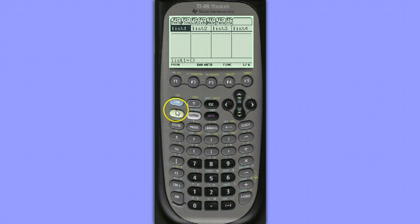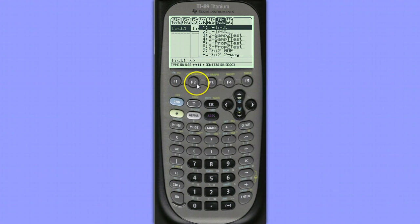Notice tests are in the F6 menu. So hit second, F1 to access the F6 menu, then choose option 8, Chi-squared 2a.